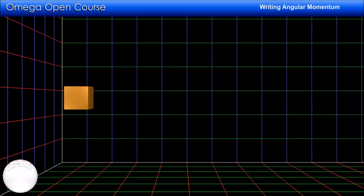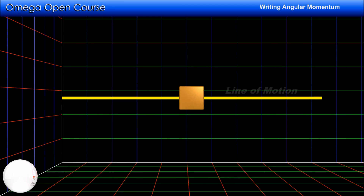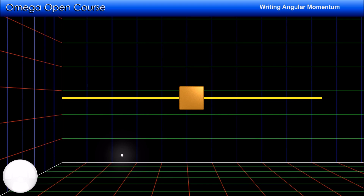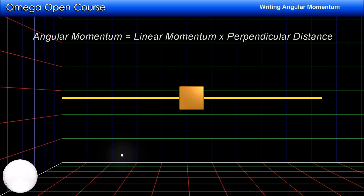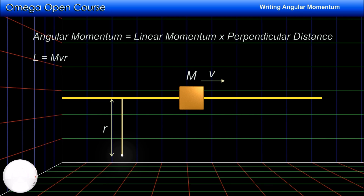Now, suppose there is a body in pure translation. Let us call the line on which its center of mass is moving the line of motion of the body. Suppose we have to find the angular momentum of the body about a point. The magnitude of the angular momentum is the product of the linear momentum of the body and the perpendicular distance of the line of motion from the point. So if the mass of the block is m, its velocity v, and the perpendicular distance of its line of motion from the point is r, then the magnitude of its angular momentum about the given point is mvr.